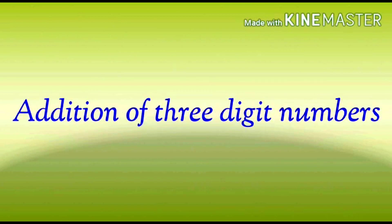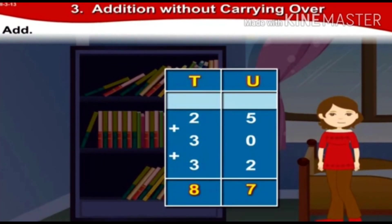Next: addition of three numbers. First sum: 25 plus 30 plus 32. They are already arranged in a vertical column. Units column: 5 units plus 0 units is 5 units, plus 2 units is 7 units. Tens column: 2 tens plus 3 tens is 5 tens, plus 3 tens is 8 tens. The answer is 87.